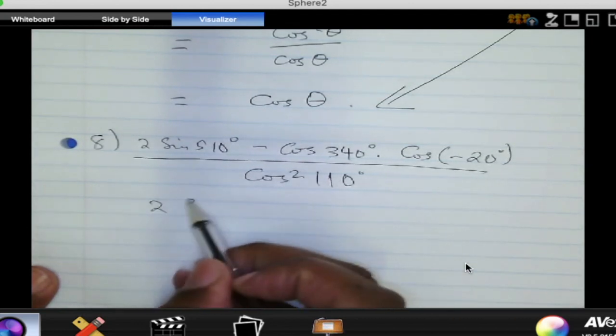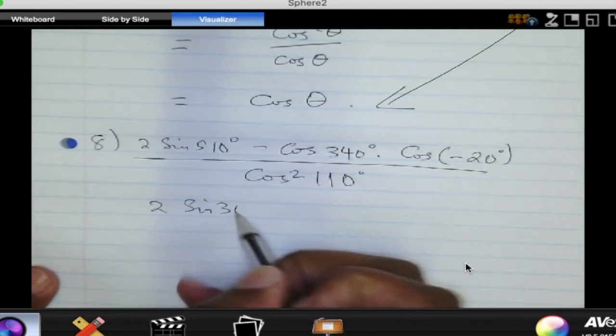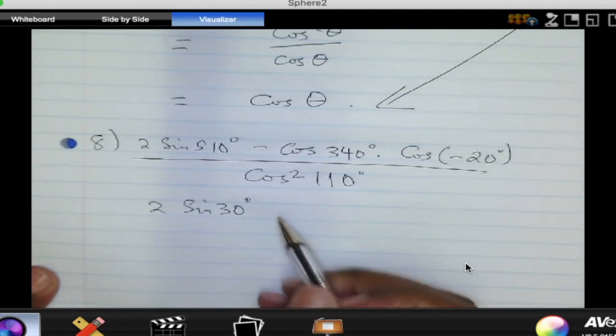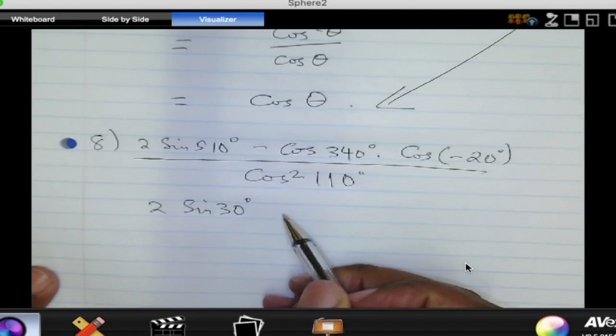So, that whole thing becomes 2 multiplied by the sine of 30, which is a special angle. Right. What about 340 degrees? Where is 340 degrees? Quadrant 4. Is it in quad 4? Yes. Right. Quad 4.